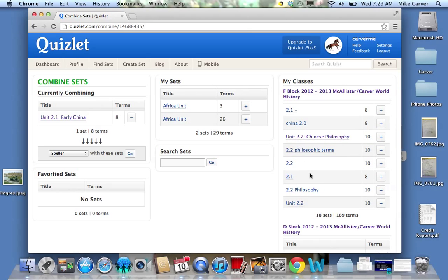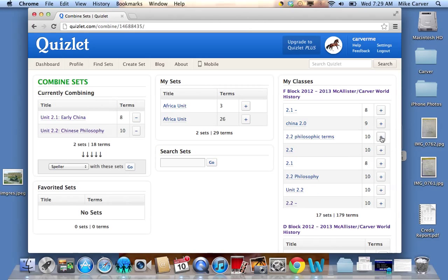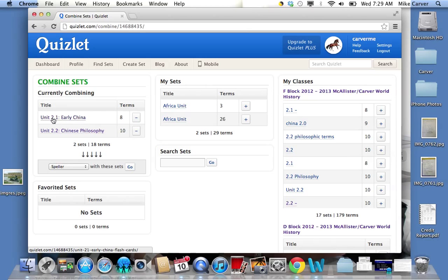So I need to combine 2.1 with 2.2. I see 2.2 right here. And I'm going to click on the plus sign. I go back over to the left-hand side. And I can see that 2.1 and 2.2 are ready to be combined.